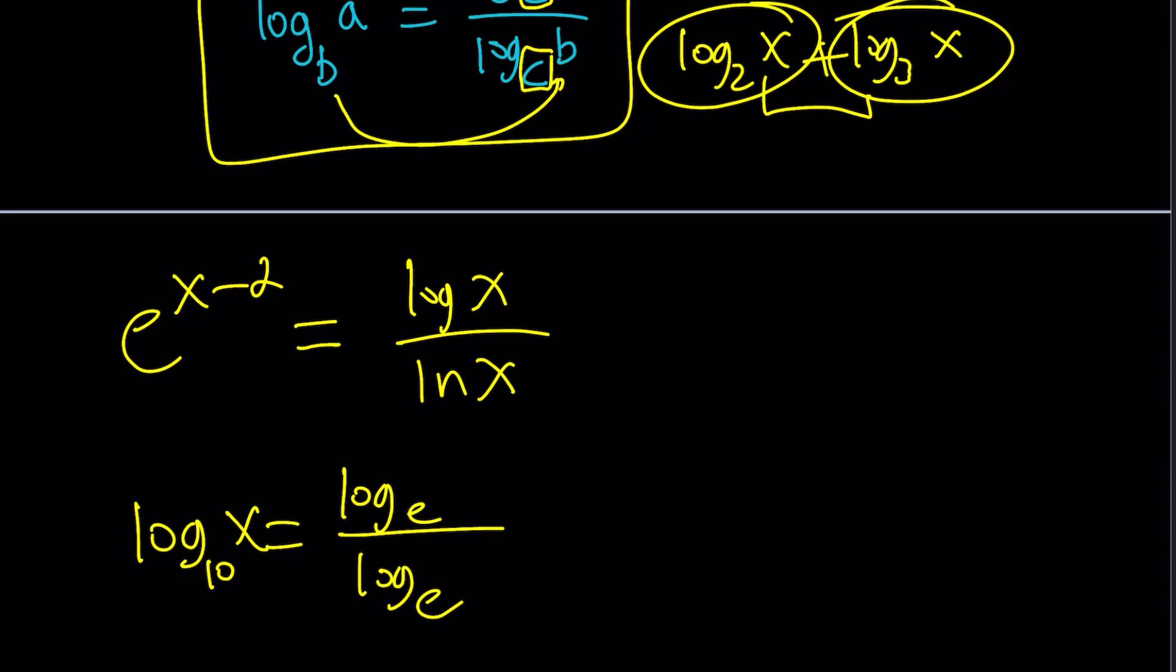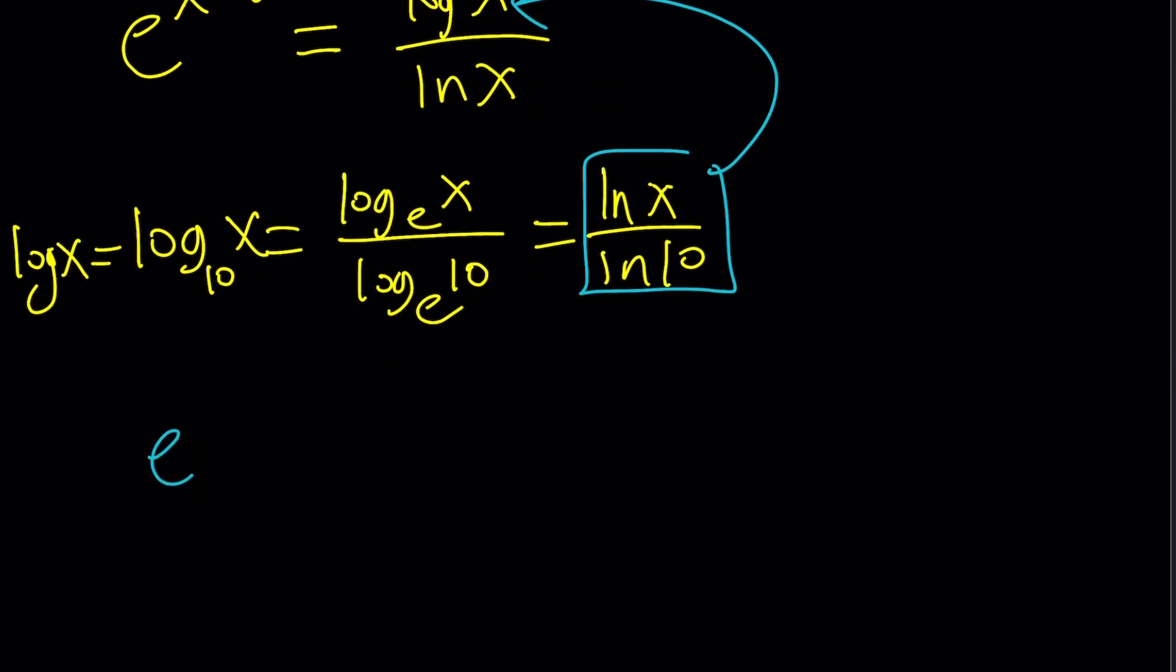And then x goes here and 10 goes here. So, this is basically the same thing as ln x over ln 10. Instead of writing the base every time, it's a lot easier to write ln. Now, we're going to replace, and this is log x without the base. Let's go ahead and make the replacements. So, we're going to replace log x with this. And that's going to give us e to the power x minus 2 equals ln x over ln 10 divided by ln x.